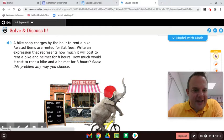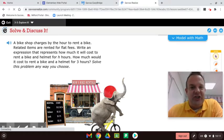A bike shop charges by the hour to rent a bike. Related items are rented for flat fees. Write an expression that represents how much it would cost to rent a bike and a helmet for H hours. So we're going to do it with H hours first. That's the algebraic expression.